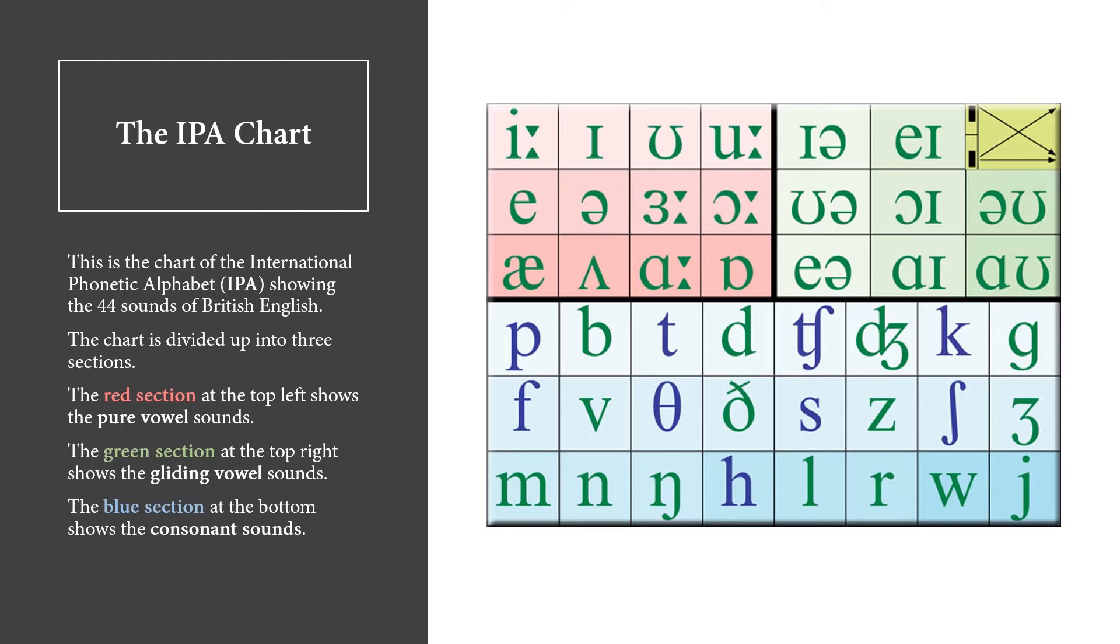The chart is divided up into three sections. The red section at the top left shows the pure vowel sounds. The green section at the top right shows the gliding vowel sounds. The blue section at the bottom shows the consonant sounds.